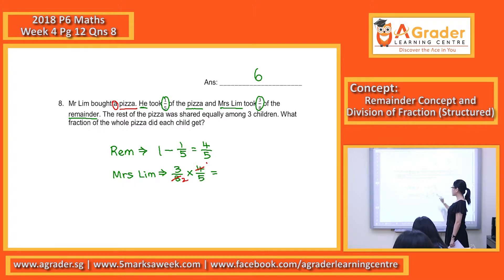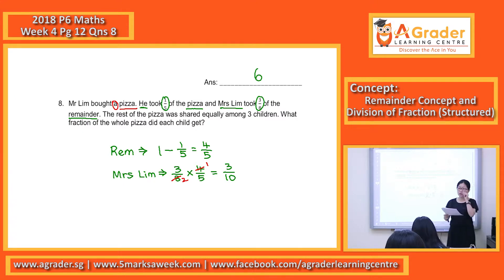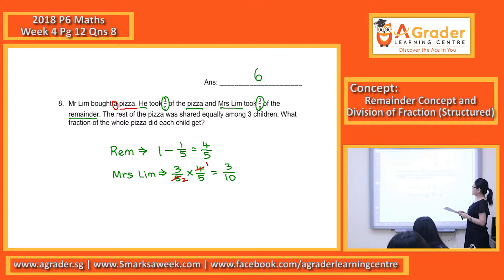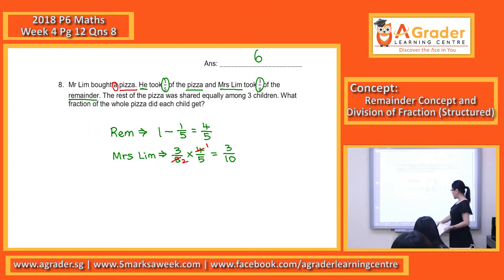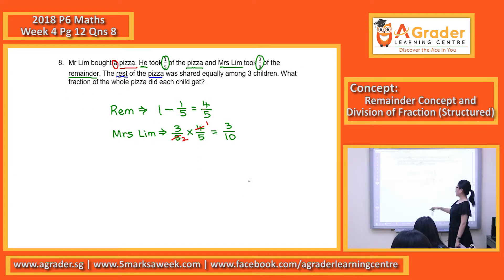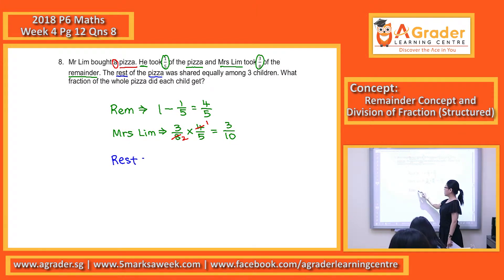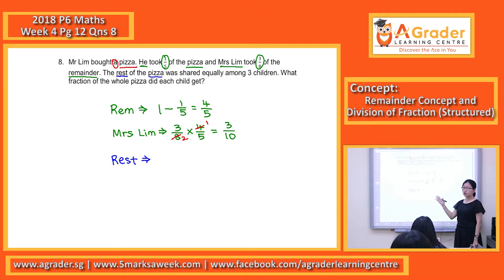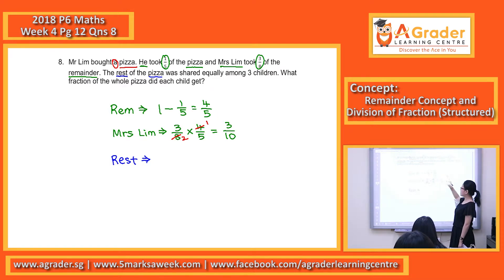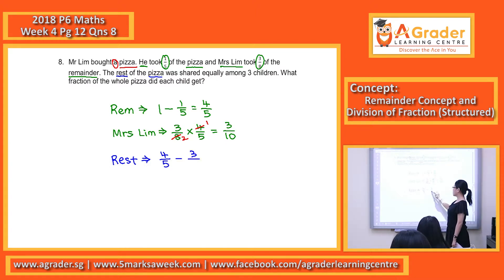After the cancellation and multiplication, we get three out of ten. So Mrs. Lin took three out of ten of the whole pizza. Mr. Lin is given the one-fifth, and now we find the rest of the pizza. You don't have to take one whole minus one-fifth minus three out of ten — you already subtracted the one-fifth before. So now just take the remainder four-fifths minus whatever Mrs. Lin took away: four out of five minus three out of ten.